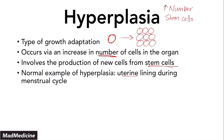During a normal menstrual cycle, the uterine lining goes from small, then it grows, then it starts to plateau off, and then it falls. This growth aspect — when the cells actually grow — happens because of hyperplasia. In the basal layer there are stem cells, and these stem cells actually push the other cells up and up and up, and that's when you get hyperplasia occurring in the endometrium.